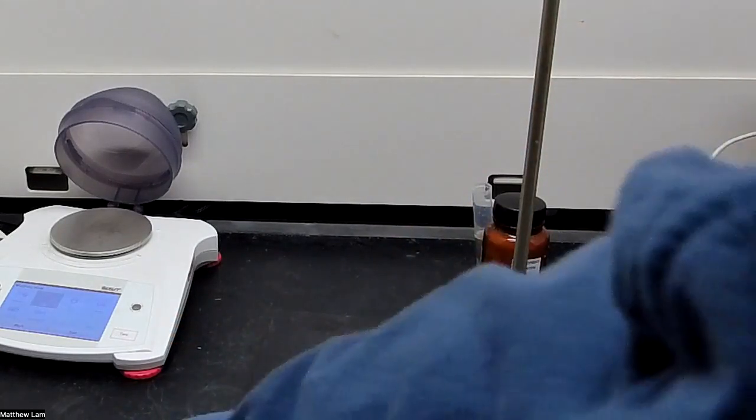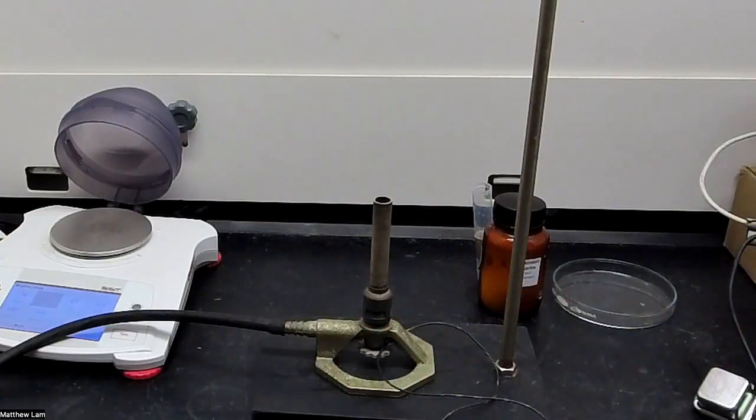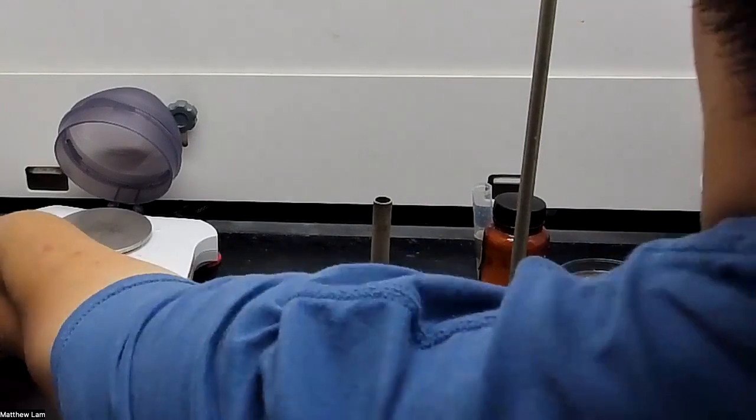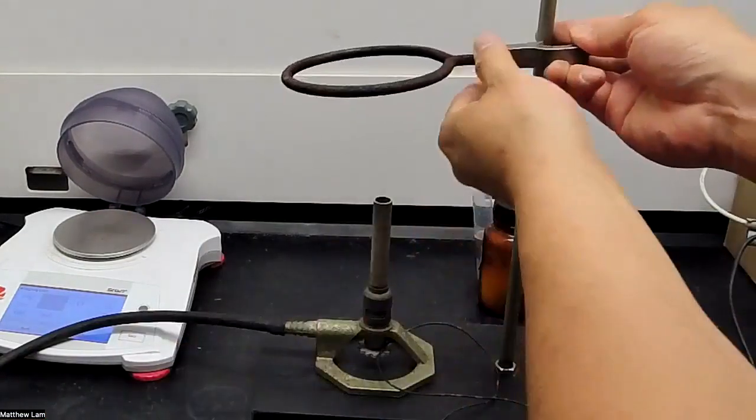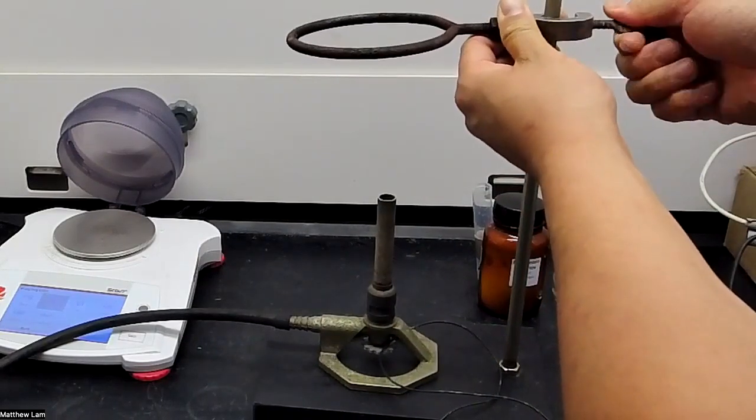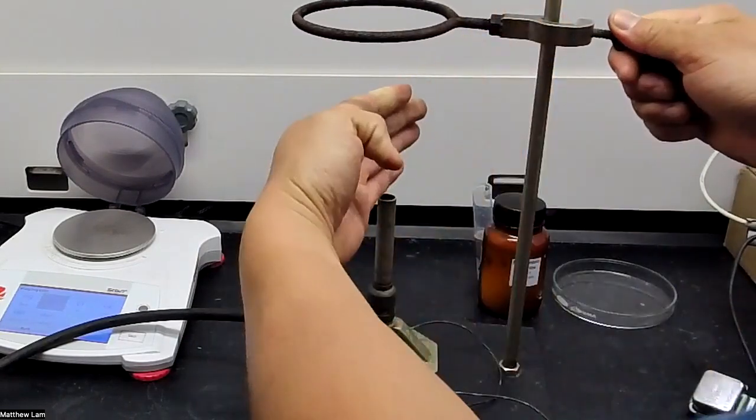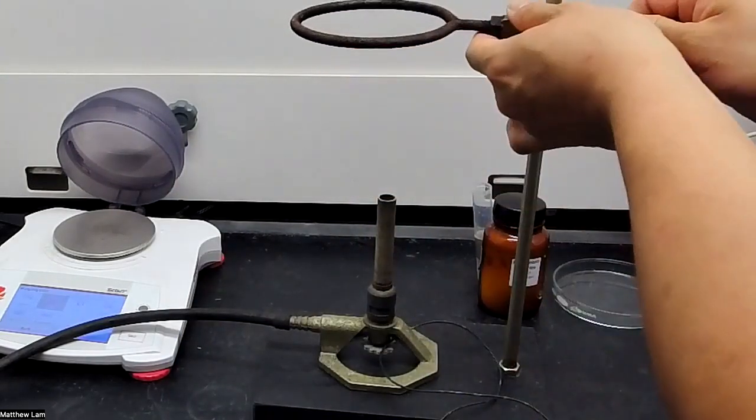So for this apparatus, we'll have the Bunsen burner on the bottom. We'll have the ring clamp right over here, right above it. It says about 10 inches from the Bunsen burner. I usually like to say like a hand and a half, so maybe about there is good.